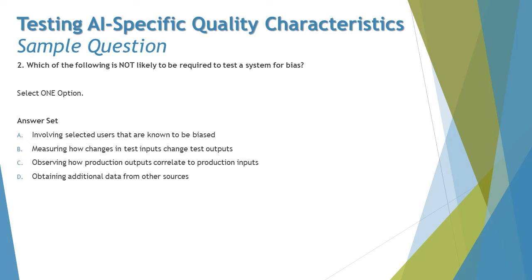Option A says: involving selected users that are known to be biased. This looks like the answer because biased users are not required to test a system for bias — they don't help determine whether the system's behavior is biased. Just because you want to find defects doesn't mean you find a defective person. This option is the odd one out, though we'll check the others too.